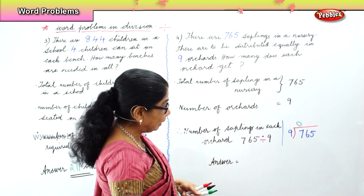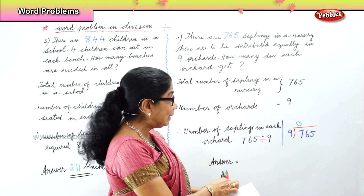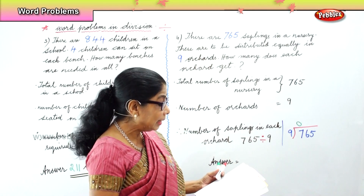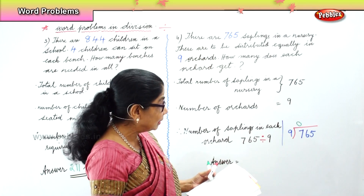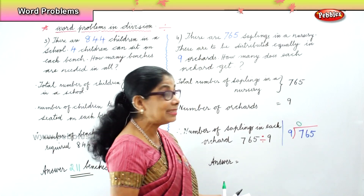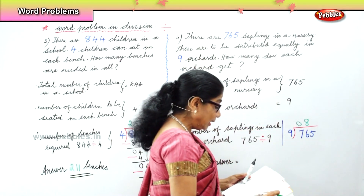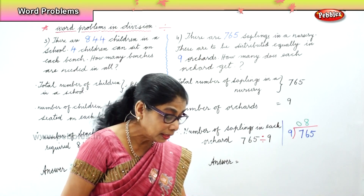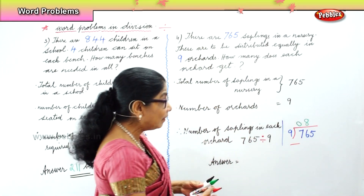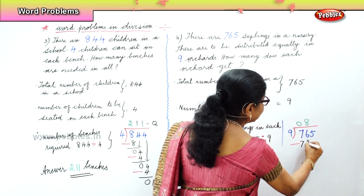In seventy-six you must know the nine times table. Nine ones are nine, nine twos are eighteen, nine threes are twenty-seven, nine fours are thirty-six, nine fives are forty-five, nine sixes are fifty-four, nine sevens are sixty-three, nine eights are seventy-two. So nine goes eight times into seventy-six. You write eight and minus seventy-two.